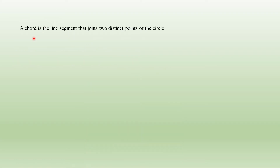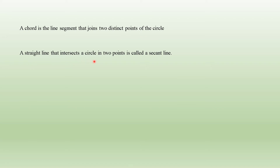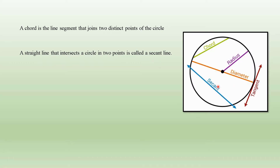Next, let us see what is a chord. A chord is a line segment that joins two distinct points of the circle. A straight line that intersects the circle in two points is called a secant line. In this figure, a chord touches the circle at two distant points. The blue line, which intersects the circle at two distant points, is called a secant.